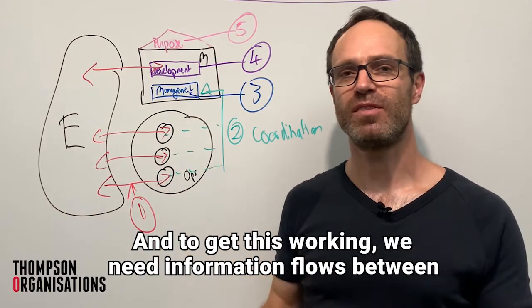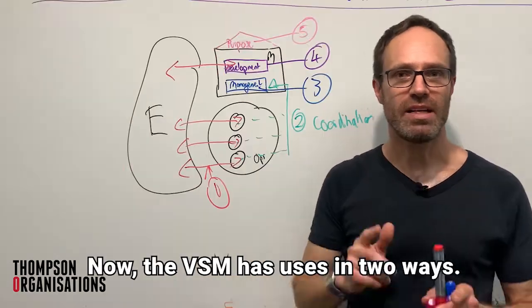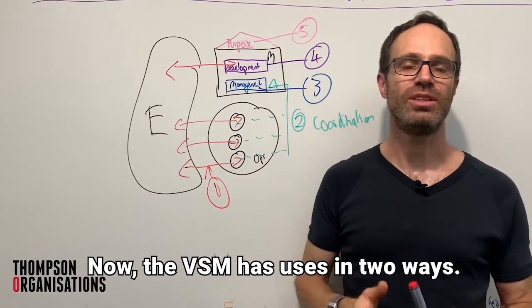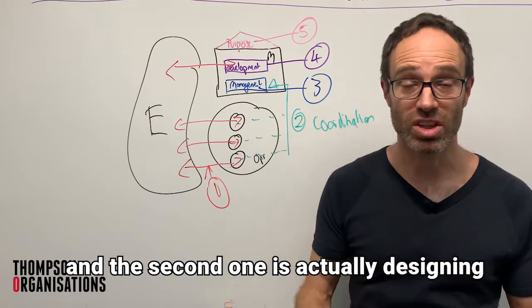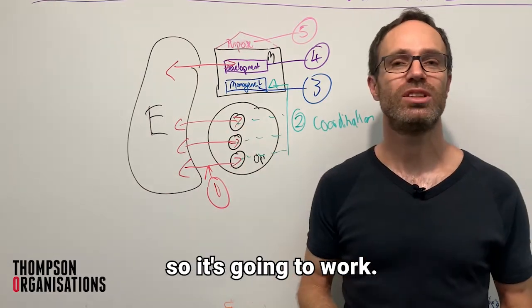And to get this working, we need information flows between all the systems to make sure that things work. Now, the VSM has uses in two ways, one of which is diagnosing where your issues might be, and the second one is actually designing your organisation using these principles so it's going to work.